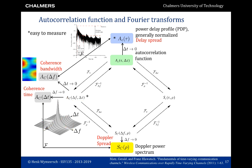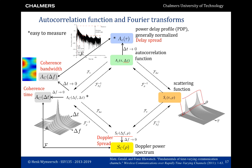We can take the Fourier transform of the autocorrelation function along Δt, which leads us to the Doppler power spectrum — just as in the narrowband fading case. From the Doppler power spectrum we read off the Doppler spread at the zero crossings. The Doppler power spectrum can also be obtained from the function S_C(Δf, ρ) by letting Δf go to zero. Finally, we have the scattering function with arguments τ and ρ, where ρ is obtained by taking the Fourier transform of the original autocorrelation function with respect to Δt and is expressed in hertz. When we fix τ to some value and cut across, we recover the Jake's spectrum. When we cut across the delay domain, we see how energy is distributed across delay, similar to the power delay profile.